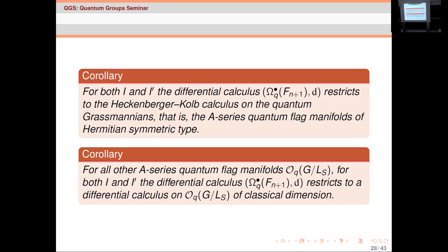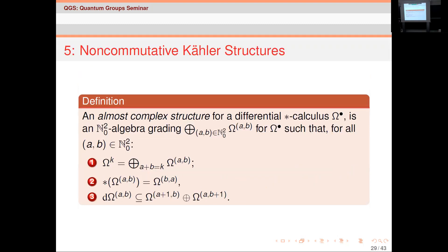This is in stark contrast to O_q(G) itself, where nothing works. Now we start to go further: we've found the de Rham complex, found some of the differential geometry, but these quantum flag manifolds have a lot more than plain differential geometry. Classically they're complex manifolds and Kähler manifolds — that's in fact how we defined them: as homogeneous simply-connected Kähler manifolds.